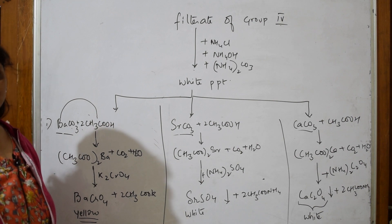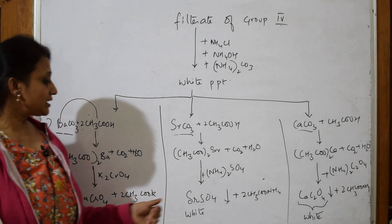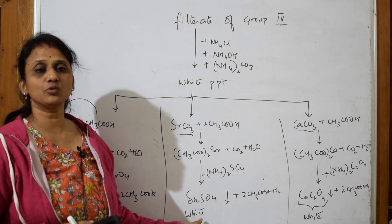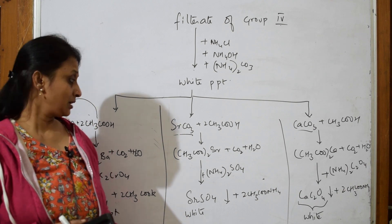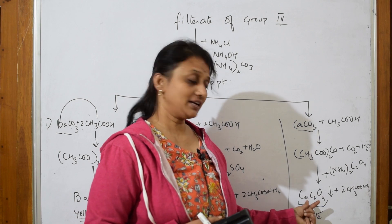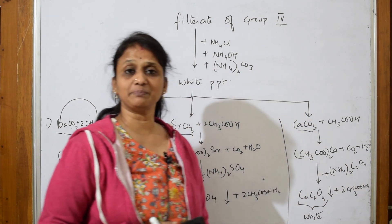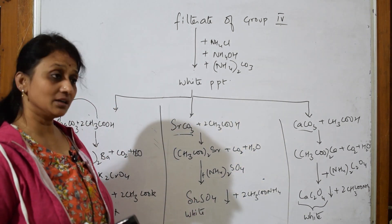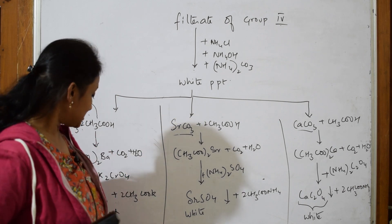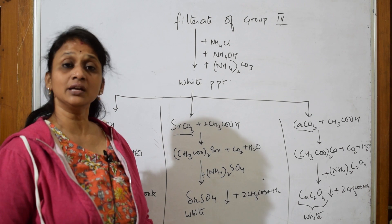If you get a yellow precipitate (LO ppt) with potassium chromate, barium is confirmed — that is the confirmatory test for barium. If you get a white precipitate with ammonium sulfate, it confirms strontium (strontium sulfate). If you get a white precipitate with ammonium oxalate, it is calcium oxalate, confirming calcium. Note: both strontium sulfate and calcium oxalate are white precipitates.